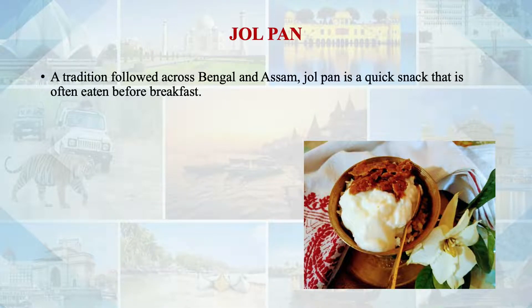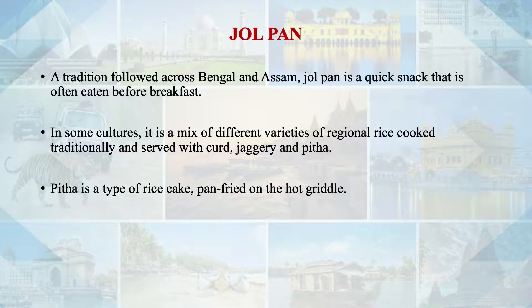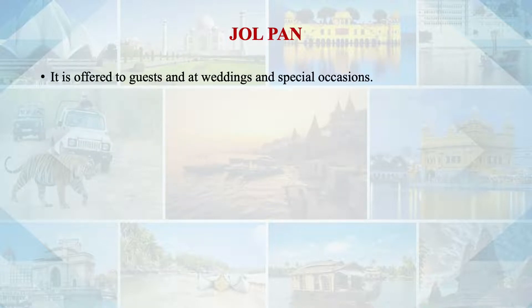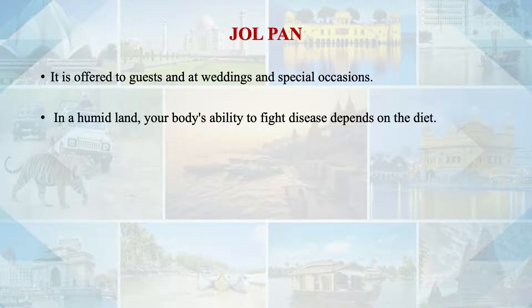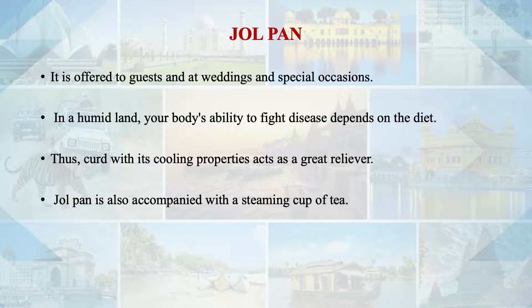Another important community-based food activity is Jalpan, a tradition followed across Bengal and Assam. Jalpan is a quick snack that is often eaten before breakfast. In some cultures it is a mix of different varieties of regional rice cooked traditionally and served with curd and jaggery. Rice is cooked in different forms and offered to guests at weddings and special occasions. It is a local food which helps the body fight against disease, and the use of curd is prominent as it works as a cooling agent.